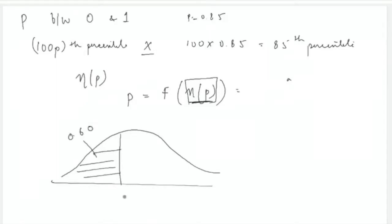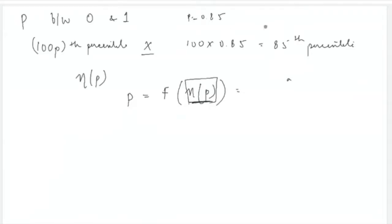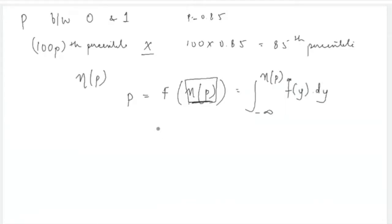For example, if p = 0.60, the score might be 40; if p = 0.70, the score might be 65. These values are η_p for different values of p. The 100×p-th percentile satisfies: p = F(η_p), which is the integral of the probability distribution function from minus infinity to η_p.